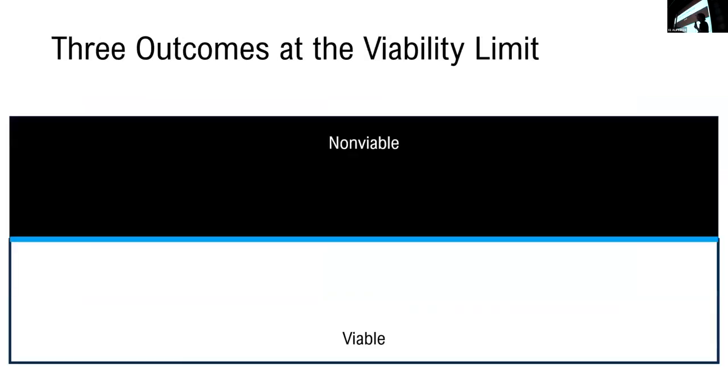So here we have our non-viable region, our viable region, and the limit that separates them. The first outcome that can happen is that the change vector is going to push into the non-viable region, resulting in a fatal outcome. The opposite is that we have a change vector that pulls us back into the viable region, which is recovery.